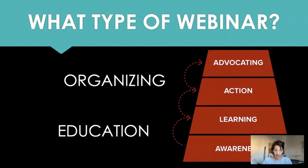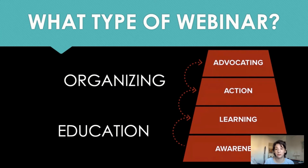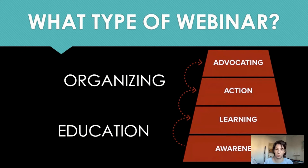To recap, we just looked at three different types of webinars. When deciding on a webinar topic, first look at your organizing goals. Do you have a lot of committed Medicare for All activists who need to be moved up the ladder of engagement into action? Use your educational webinars to bring in new people and new coalition partners, but don't get stuck at the bottom steps — learning and awareness — forever. We want to activate the people we've educated so that they can affect change on Medicare for All.